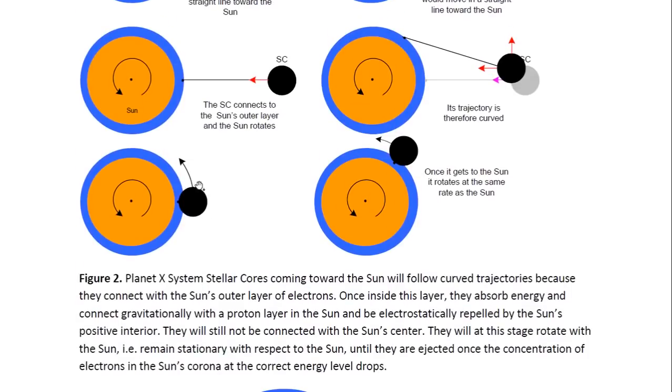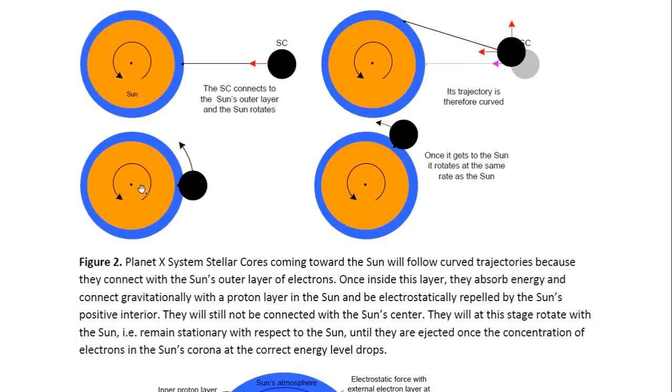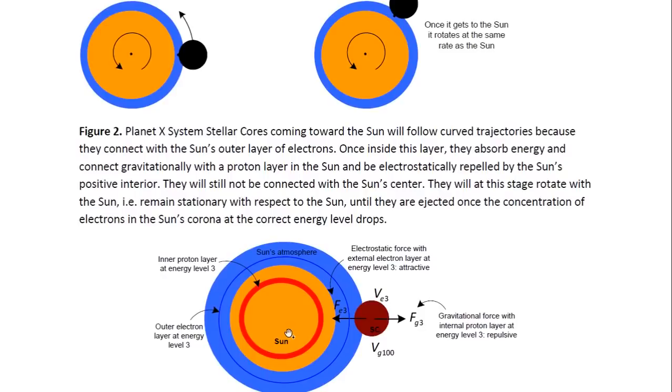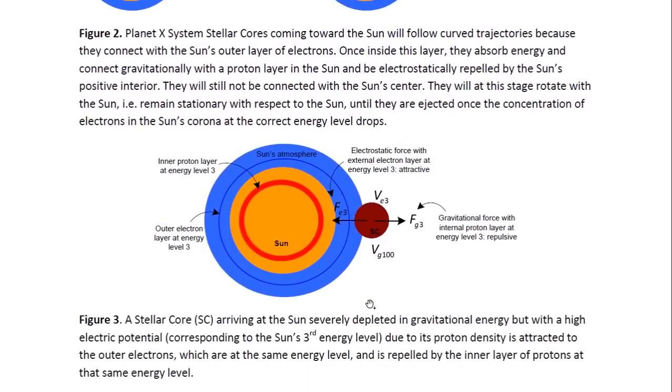Once the object comes in and actually touches the Sun's atmosphere or comes into the Sun, we would expect it to rotate at the same rate as the Sun because now it's directly connected, like being an object inside the Sun's atmosphere. So they will still not connect with the Sun's center at this point. They will at this stage rotate with the Sun. In other words, they will tend to remain stationary with respect to the Sun until they are ejected once the concentration of electrons in the Sun's corona at the correct energy level drops. Once that concentration of electrons drops, the force which causes them to be attracted towards that point disappears, and this is illustrated here.